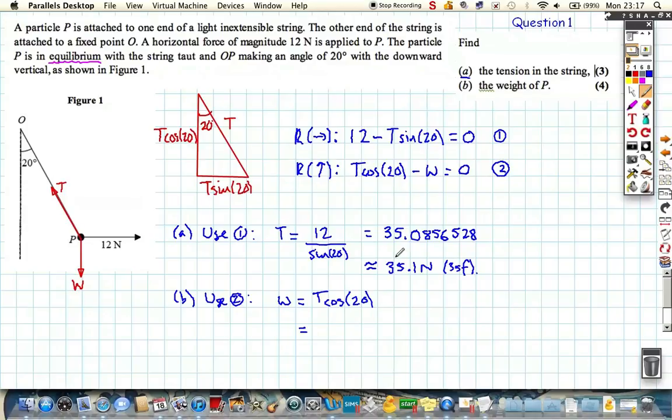Now, I'm not going to use the rounded answer, I'm going to use the exact answer from my calculator. I'm just going to use the answer button, and multiply that by cos 20, and I get 32.96972903, which is approximately equal to 33.0 newtons, rounding it to three significant figures. Because I didn't use a rounded answer, I used the exact answer. If I'd used the rounded answer, I would only round this answer to two significant figures, otherwise I'm going to get an error. Okay, and we're finished.